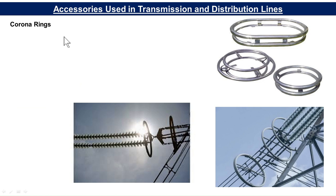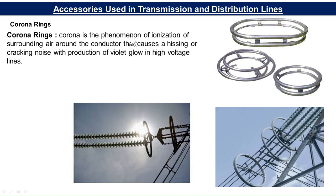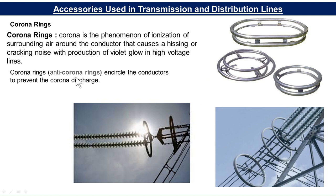Then there are corona rings. You have seen these rings on various transmission lines and towers. Corona is the phenomenon of ionization of surrounding air around the conductor that causes a hissing or crackling noise with production of violet glow in high-voltage lines. Corona rings, also called anti-corona rings, encircle the conductors to prevent corona discharge.